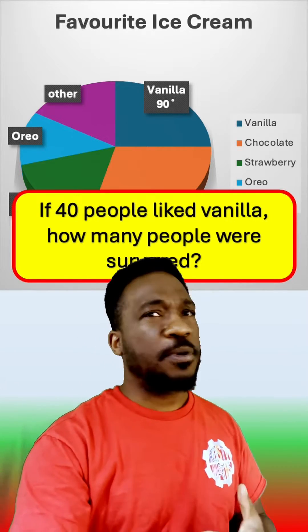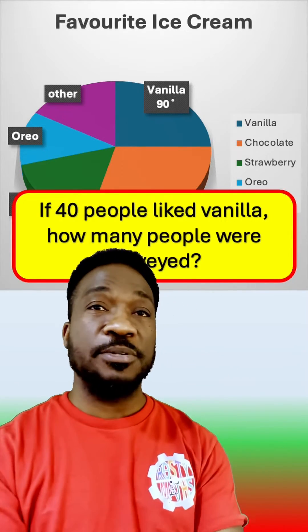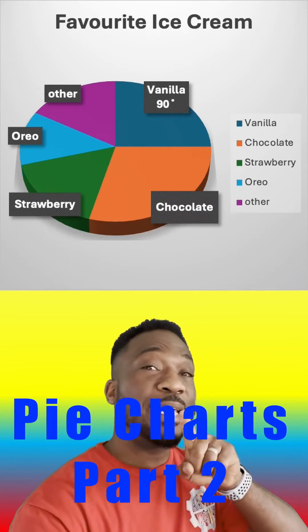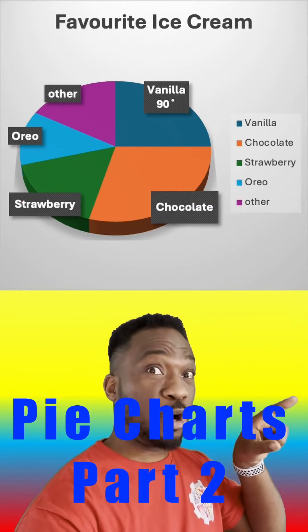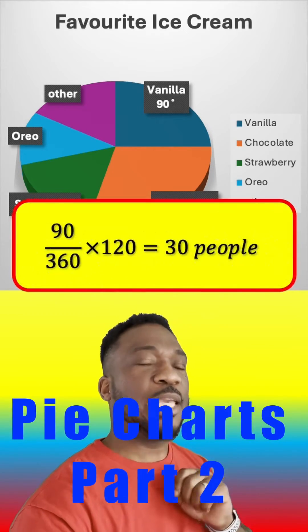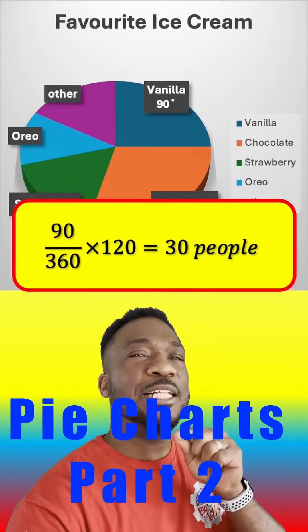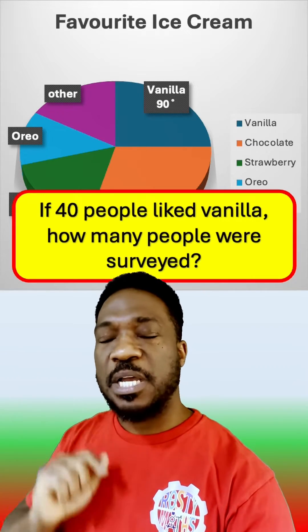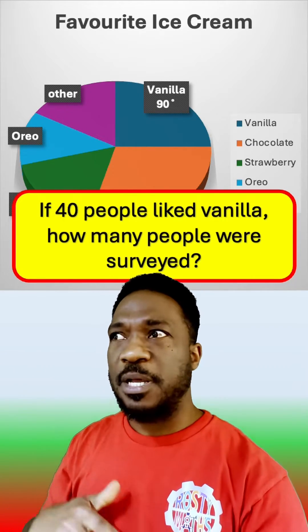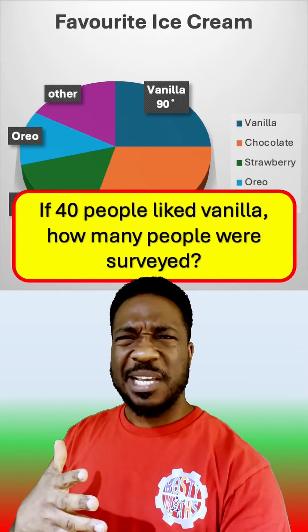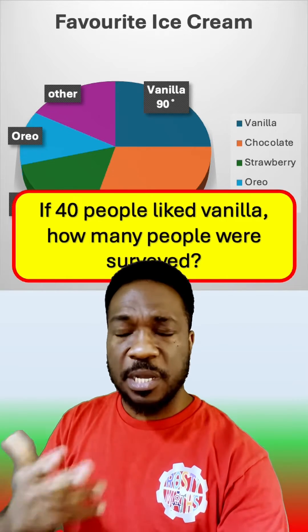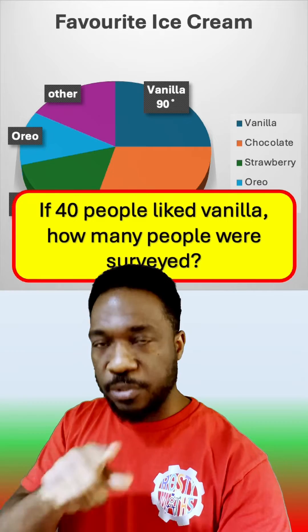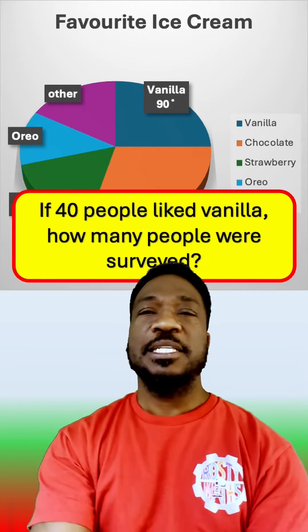You know from watching my other two videos that we would have taken a proportion — we would have done 90 over 360, multiplied it by the total, and that would give us how many people like vanilla. But this time they told us how many people like vanilla and they want the total people that have been surveyed.